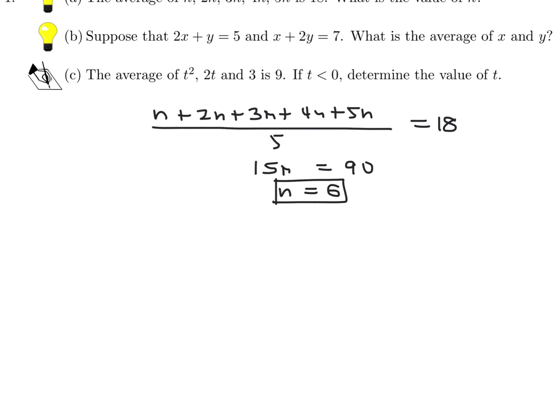Part B. Suppose that 2x + y = 5 and x + 2y = 7. What is the average of x and y? I'm just going to add them, so this is 3x + 3y = 12. Divide through by 3, and you get x + y = 4. We want the average of x and y, so x + y divided by 2. Just divide both sides by 2, and you get the answer, which is 2.